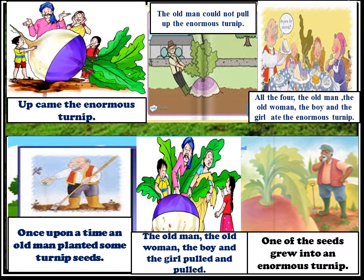You have to make them in proper sequence, then you will get the story. So here is the first picture: up came the enormous turnip. Second: the old man could not pull off the enormous turnip. Third: all four — the old man, the old woman, the boy, and the girl — at the enormous turnip. Fourth: once upon a time, an old man planted some turnip seeds. Fifth: the old man, the old woman, the boy, and the girl pulled and pulled. And the sixth one: one of the seeds grew into an enormous turnip. So this is the improper sequence of the story from The Enormous Turnip.